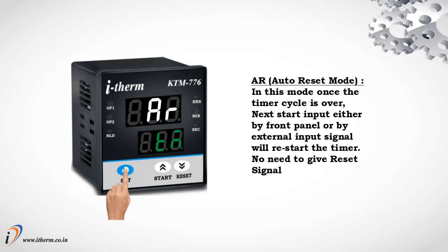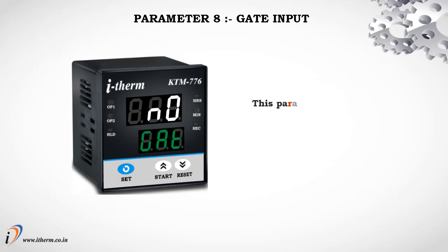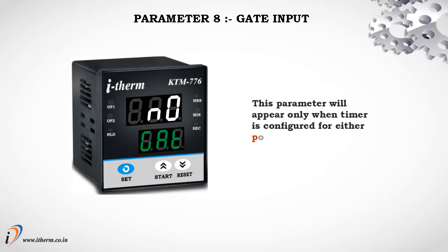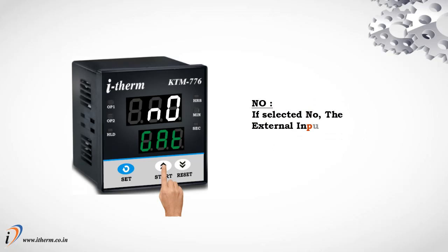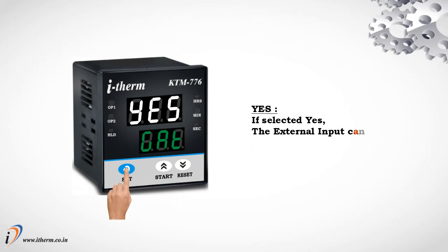Parameter 8: Gate Input. This parameter will appear only when the timer is configured for either Power On Start or Front Start. If No is selected, the external input cannot be used as a gate input. If Yes is selected, the external input can be used as a gate input.